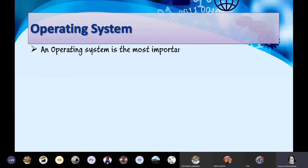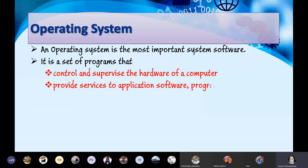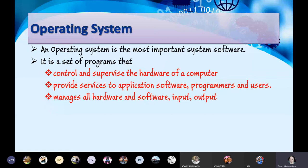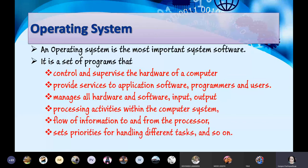An operating system is the most important system software. It is a set of programs that control and supervise the hardware of a computer, provides services to application software, programmers, and users, manages all hardware and software input-output processing activities within the computer system, controls the flow of information to and from the processor, and sets priorities for handling different tasks.